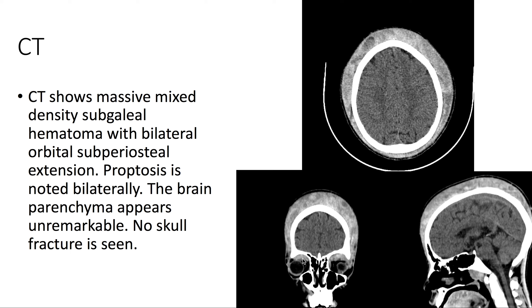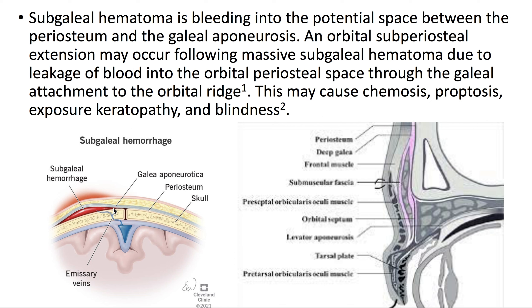A subgaleal hematoma, as depicted here, is bleeding into the potential space between the periosteum and the galeal aponeurosis.